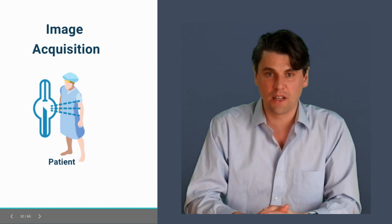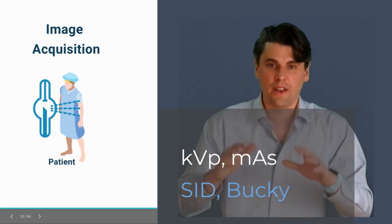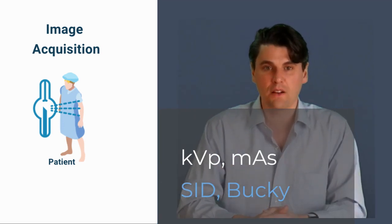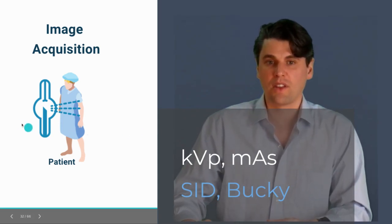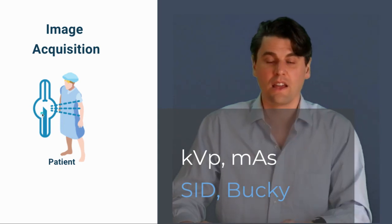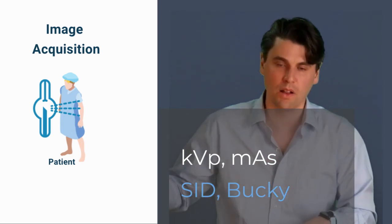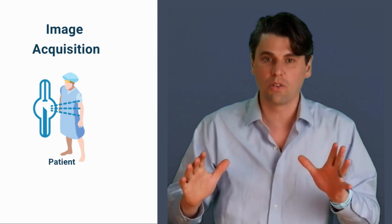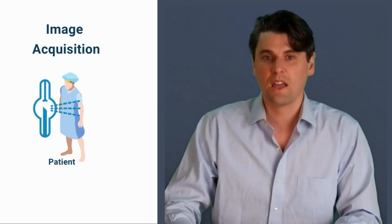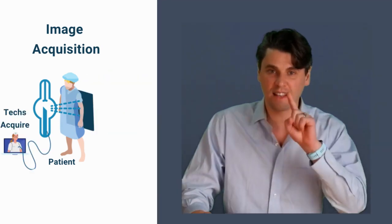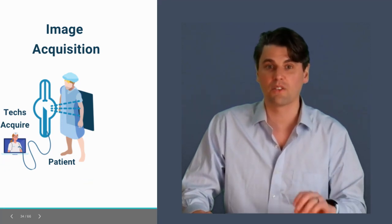Starting first with the image acquisition, you as a technologist are going to be setting the parameters — the technical factors that are most important for your image acquisition. That is exactly the same as with film-based techniques. So you're setting on your x-ray system the KVP, mA, the time, all of these really important factors, as well as your Bucky and your SID. Those are all the same, and the fact that you have a cassette is also the same in computed radiography. You're placing the cassette in there, then performing that acquisition with the technical factors we just talked about.